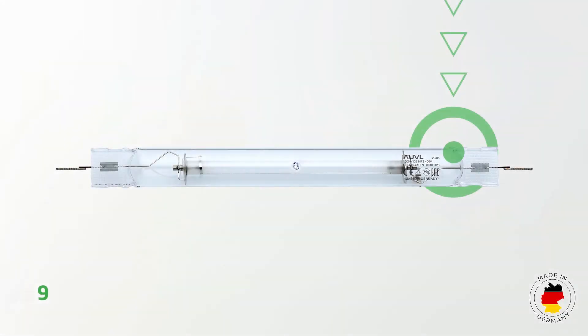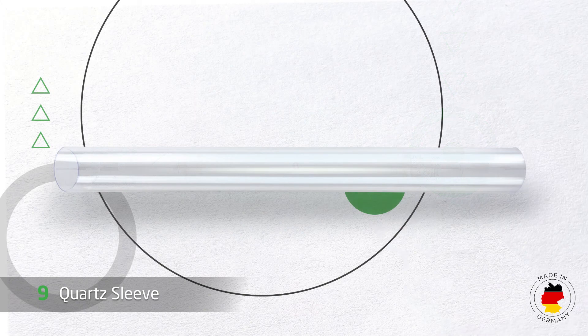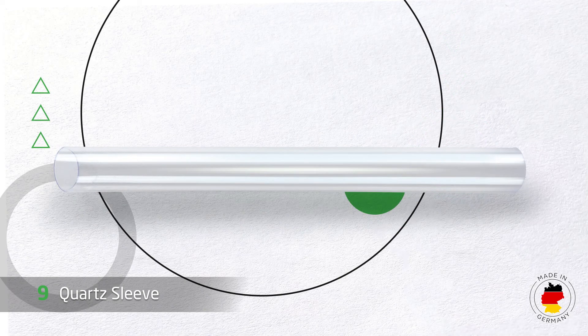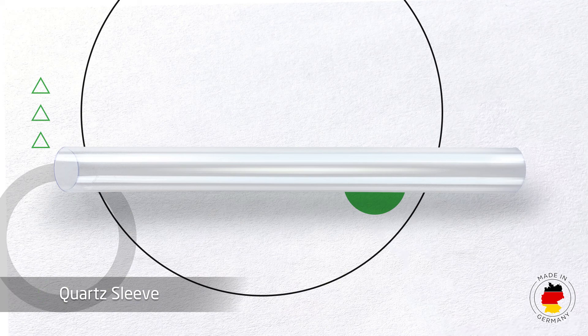And finally, number nine, the quartz tube. This quartz tube not only gives the lamp its shape but also protects the components. A further advantage is that the lamp can be used in an open fixture without an additional filter screen. It protects us as humans so that undesired UV radiation does not get outside the lamp.